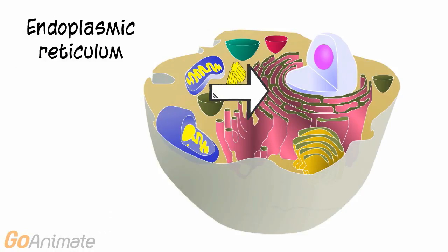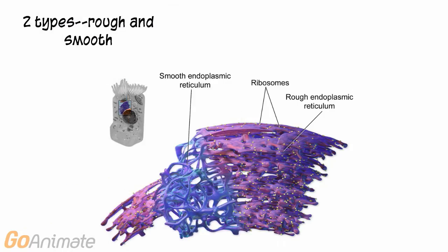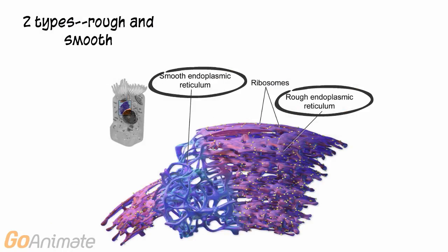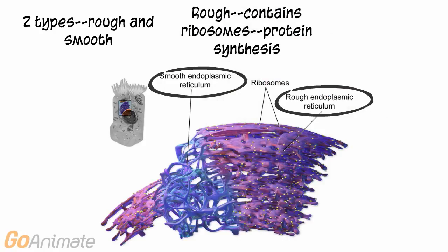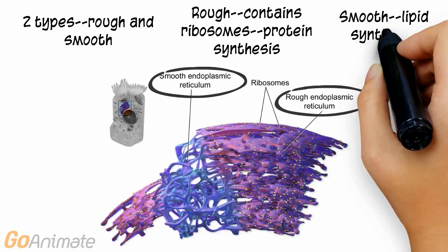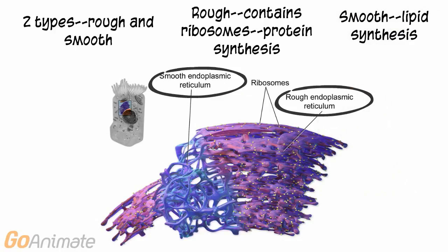Let's take a closer look at the endoplasmic reticulum. There are two types of endoplasmic reticulum: rough and smooth. Rough endoplasmic reticulum contains ribosomes for making proteins. Smooth endoplasmic reticulum does not contain ribosomes, and is for lipid synthesis.